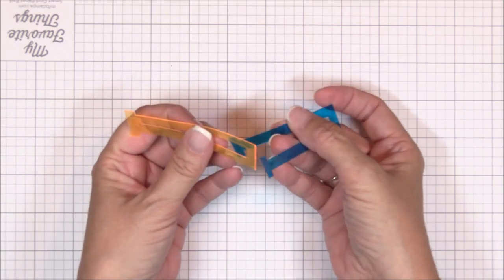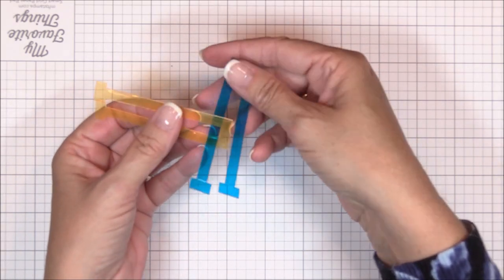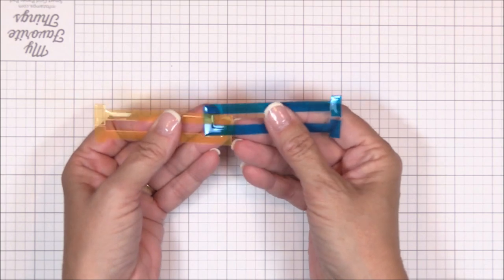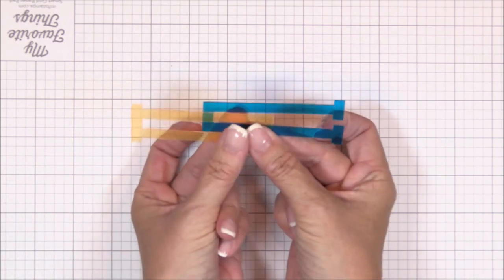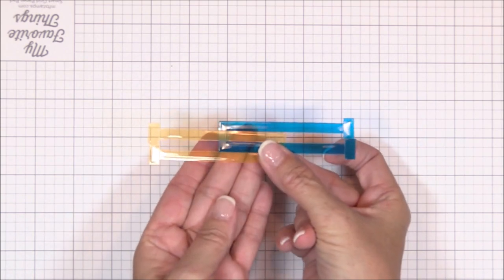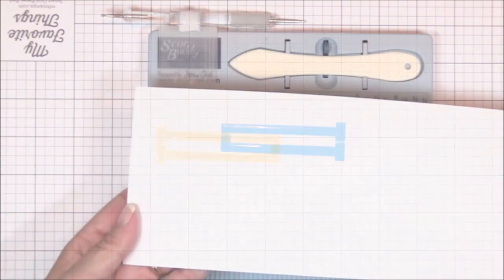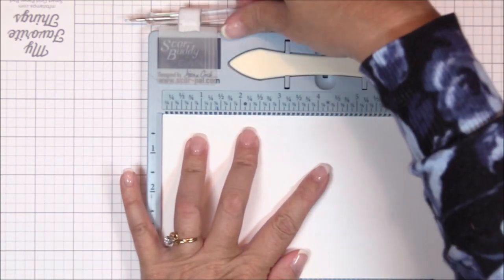To demonstrate how the dies work I've die cut them out of colored acetate as it's much easier to see in the camera and will hopefully help you understand the science behind the mechanism. I'll share many helpful tips and tricks along the way which can all be found in the tips and tricks PDF that's linked below in the video information.